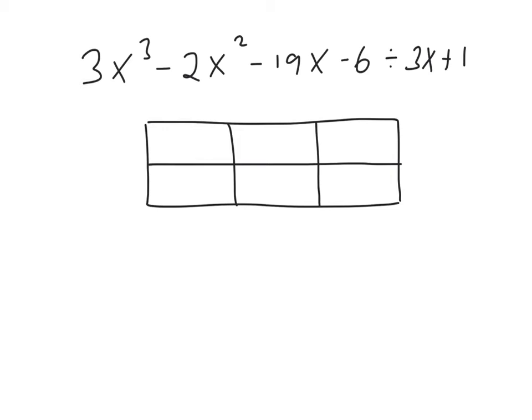Now we take the divisor here, 3x plus 1, and we place that out to the left of the grid, making sure that the 3x is opposite this row and the plus 1 is opposite this row. The next thing we need to do is to take the 3x cubed, the very first term here, and put it into the very first cell of the grid on the far left hand side.